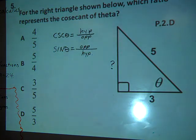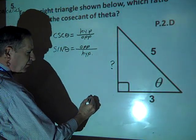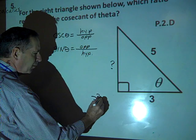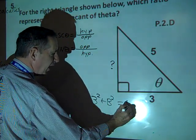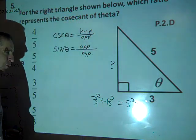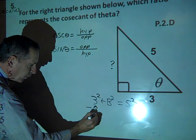Pythagorean theorem. So we have a squared plus b squared equals c squared. So 3 squared plus b squared, we'll call that a, equals 5 squared. What do we do to solve for b? Let's subtract 3 squared.